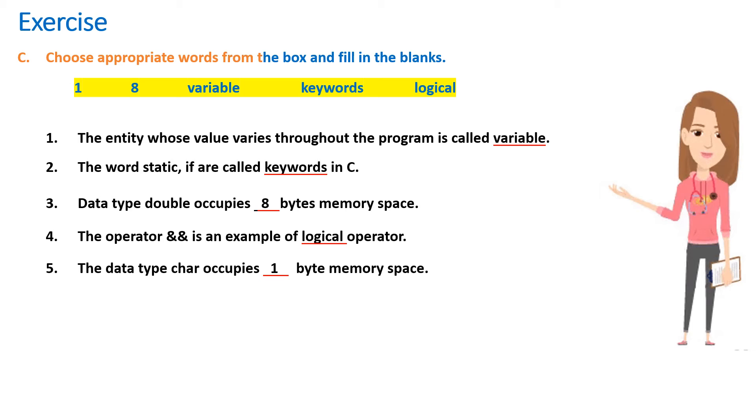Choose appropriate words from the box and fill in the blanks. 1. The entity whose value varies throughout the program is called variable. 2. The word static, if, are called keywords in C.